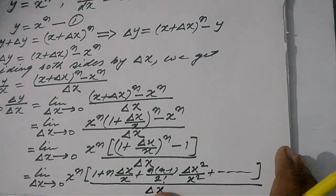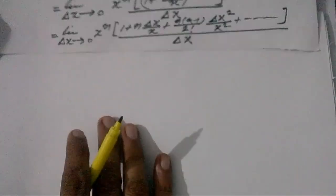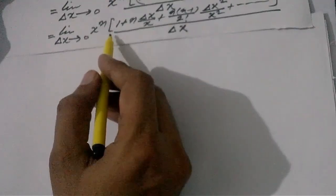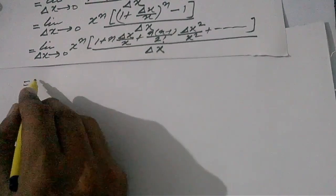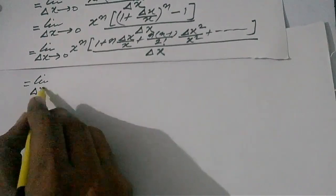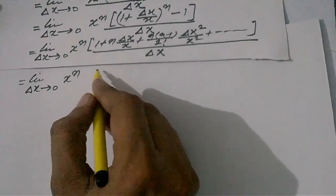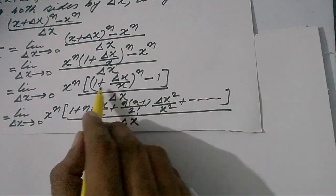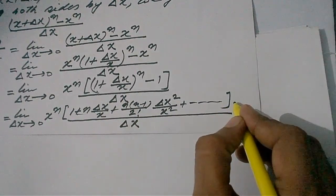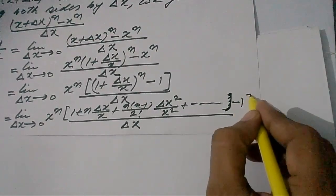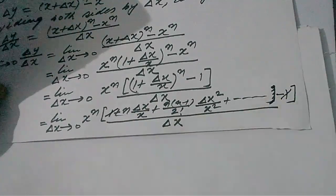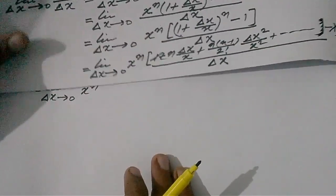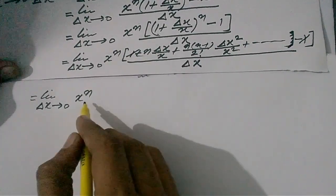Proceeding from this step, we have limit delta x tends to 0, x raised to the power n. Here I forgot to write minus 1, because expanding this expression, at last we need to write minus 1, since it is outside this expression. So this minus 1 will cancel the plus 1, and we are left with limit delta x tends to 0, x to the power n.